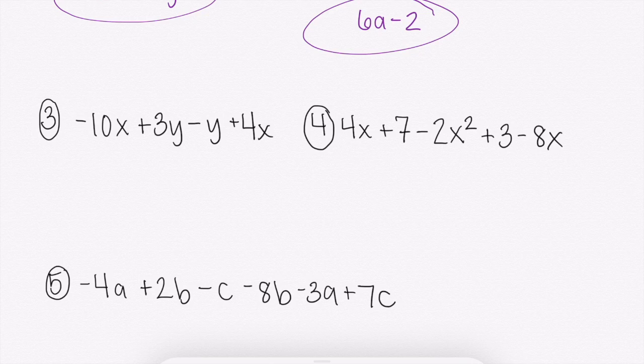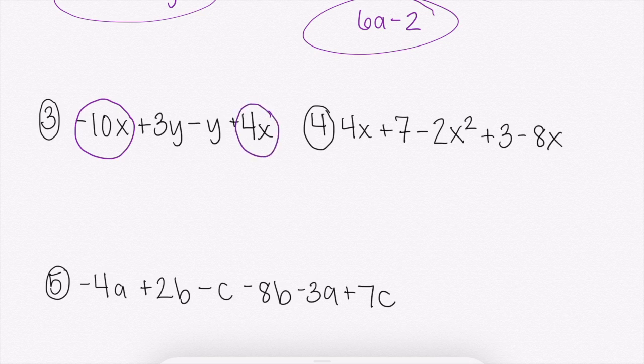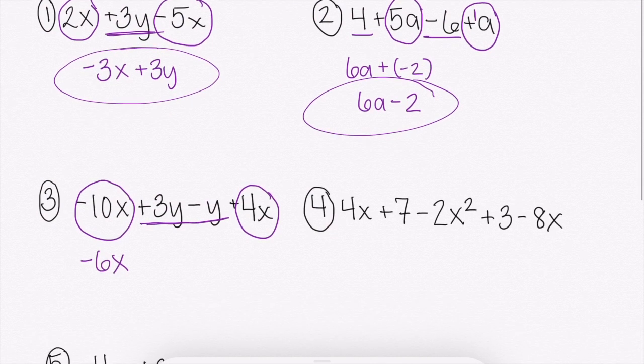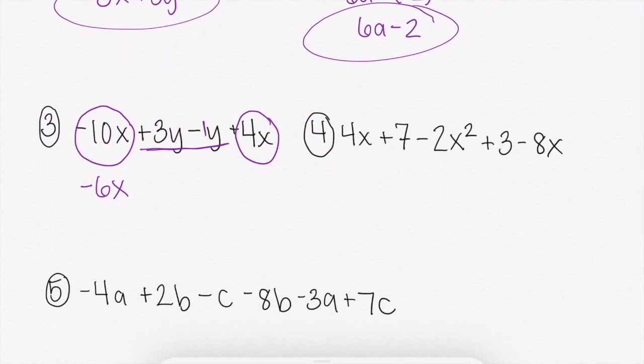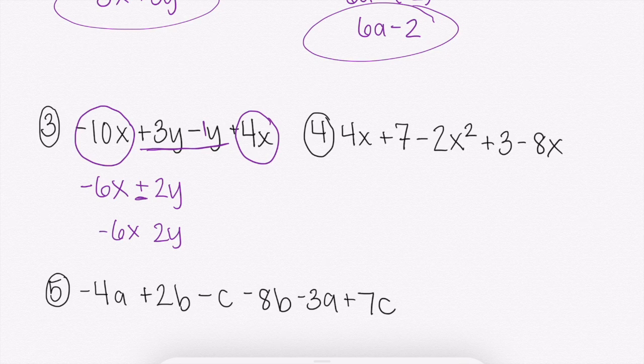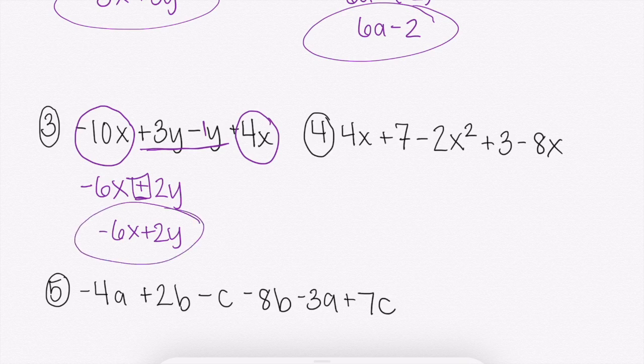Number 3, combine your like terms. We have a negative 10x and a positive 4x. Negative 10 plus 4 would get us negative 6 with the like term x. And then we're going to combine our y's. Just like before when a was by itself, there was an imaginary 1. Same thing here, there's an imaginary 1 in front of that y. So 3y minus a y or 3y minus 1y would get us 2y, and that's a positive 2y. Make sure you remember to have those operations in between. I know a lot of people will just be like, there's negative 6x and there's 2y. That is not the answer. That's no longer the same expression. That's now saying that those are being multiplied together. So make sure you keep those symbols in between your different like terms. Negative 6x plus 2y should be our answer.